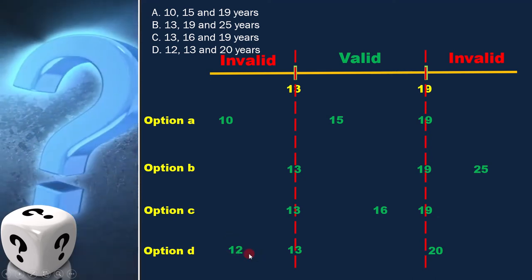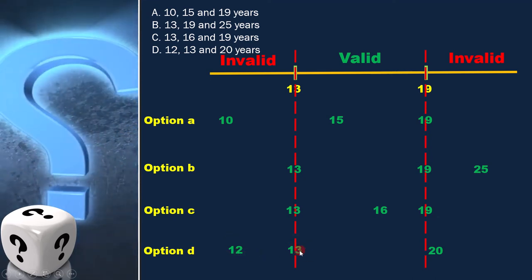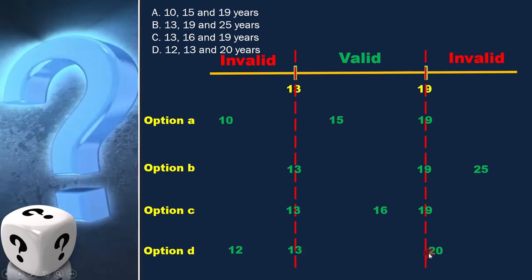In option D, 12 is in the invalid range, whereas 13 and 19 are in the valid range.